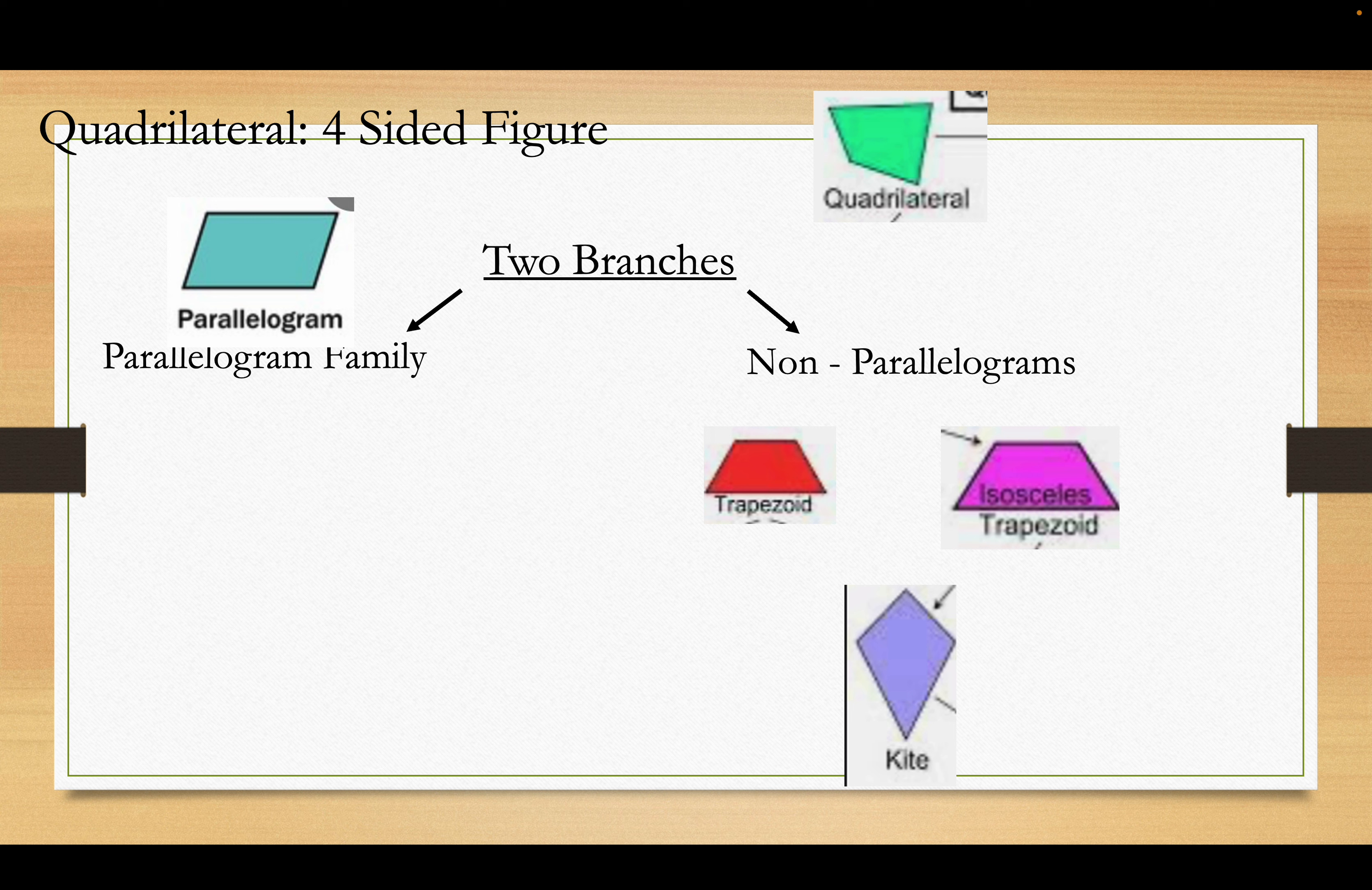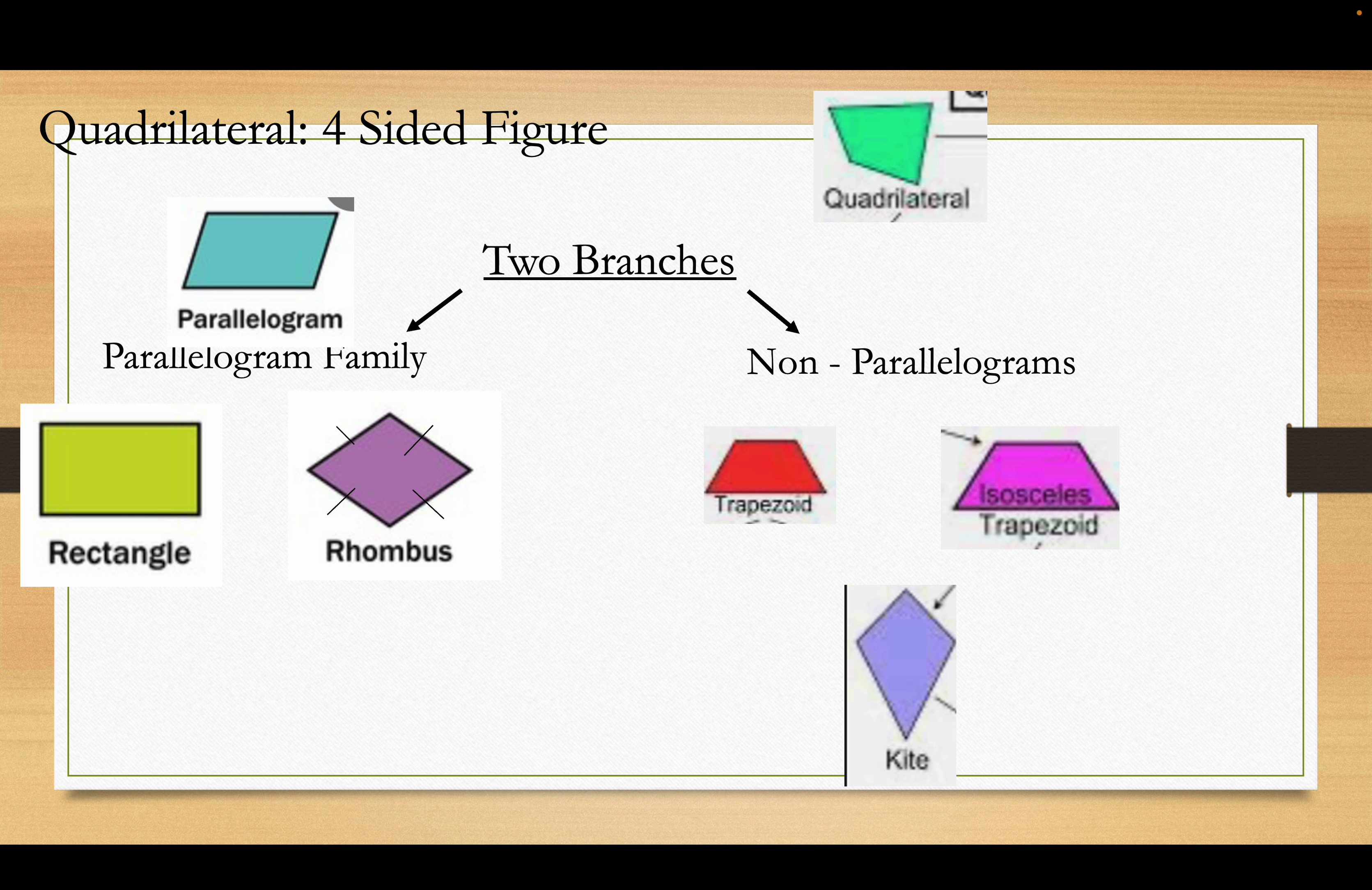And likewise, the people in the parallelogram family, the shapes in the parallelogram family, they inherit the tendencies of Papa parallelogram. So anything that's true for Papa parallelogram is true for the rest of his family. The rectangle, the rhombus, and the square. Now, they're not exactly like their parents, just like you're not exactly like your parents, but they do share certain traits in common.